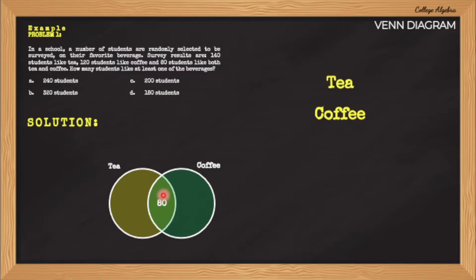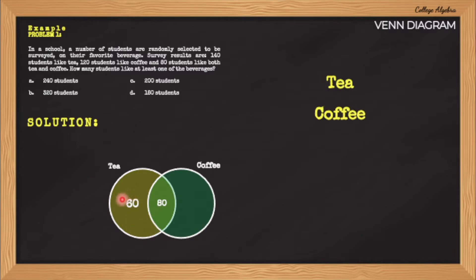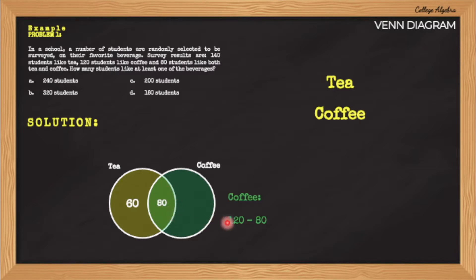With that, we need to work outwards to fill the rest of the diagram. According to the problem, there are 140 students who like tea. This 140 includes those 80 who like both tea and coffee. We need to subtract the 80 from 140 to know how many students only like tea, and that is 60. So in this figure, there are 140 students who like tea, 80 of them like both tea and coffee, so that means only 60 students like tea only. Applying this same principle for the set of coffee, according to the problem, there are 120 students who like coffee, and these include those 80 who like both drinks. Therefore, we subtract the 80 from 120 to determine the number of students who only like coffee, and that is 40.